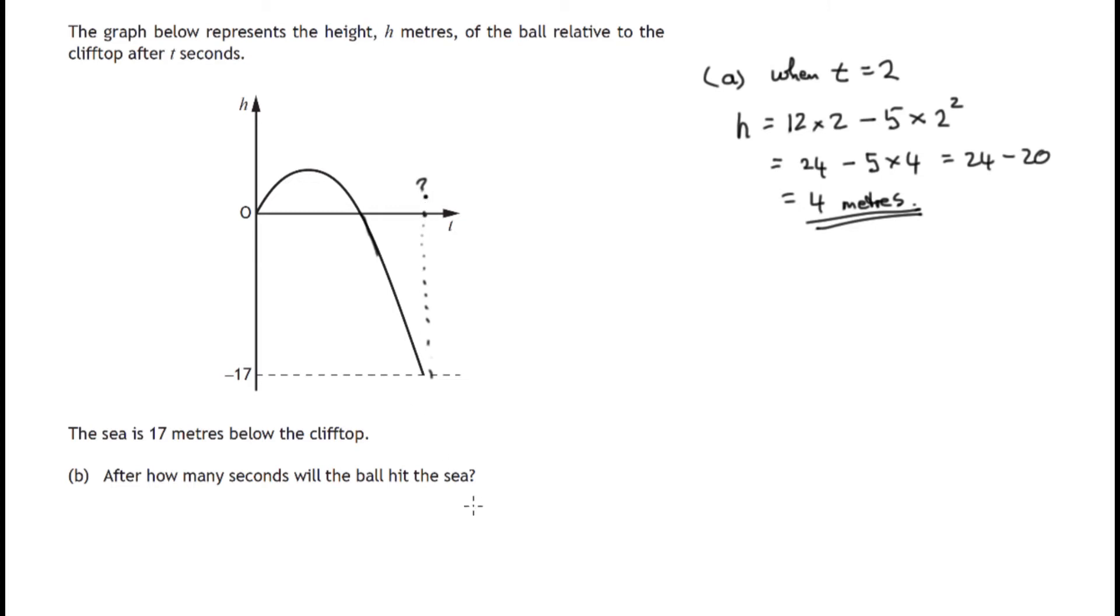That's this value here. So given h, we now have to find t. So let's have a look at the formula. Remember, h was equal to 12t minus 5t squared. In this case we know that h is equal to negative 17.